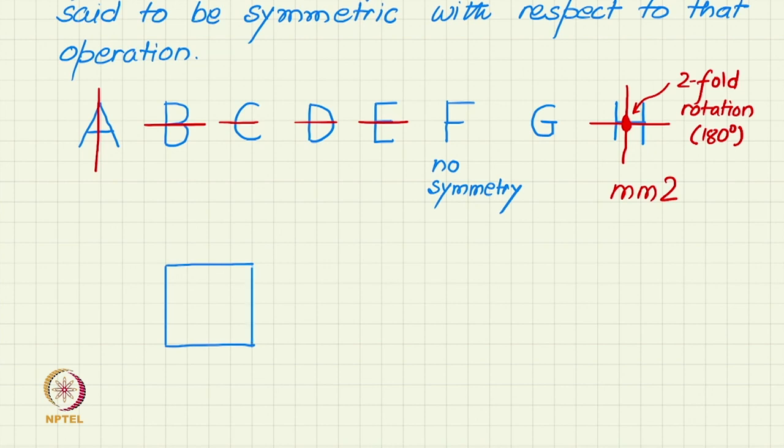Intuitively we know that a square is highly symmetric. But by the definition of our symmetry, just like we have seen now, we see that it has a horizontal mirror and a vertical mirror, just like the letter H was having. But apart from this, it also has two diagonal mirrors, which the letter H was not having.